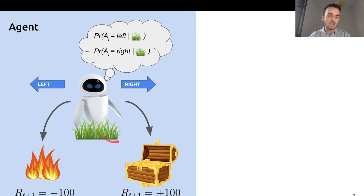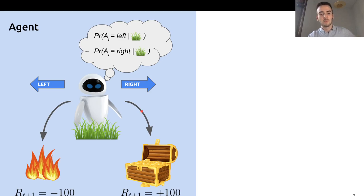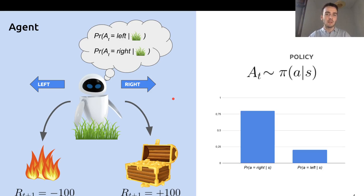For example, the agent visits this grass state and needs to figure out whether to go left, which gives it a very negative reward for reaching the fire, or to go right, which gives it a very positive reward for reaching the treasure. We model this decision making by means of a categorical probability distribution, namely the policy. Ideally, we would like the policy to give a higher probability value to going right, given that the agent finds itself in this grass state.